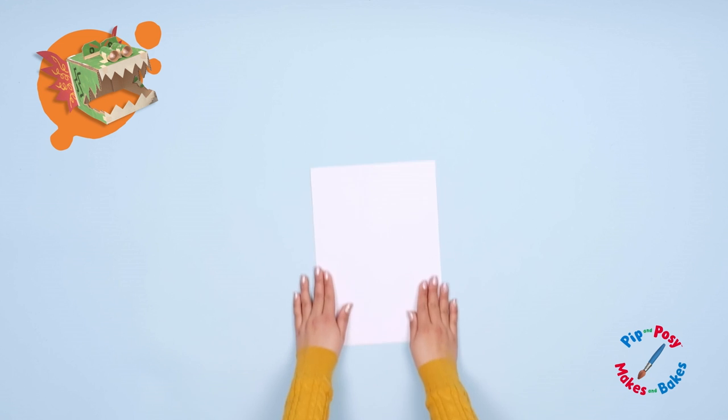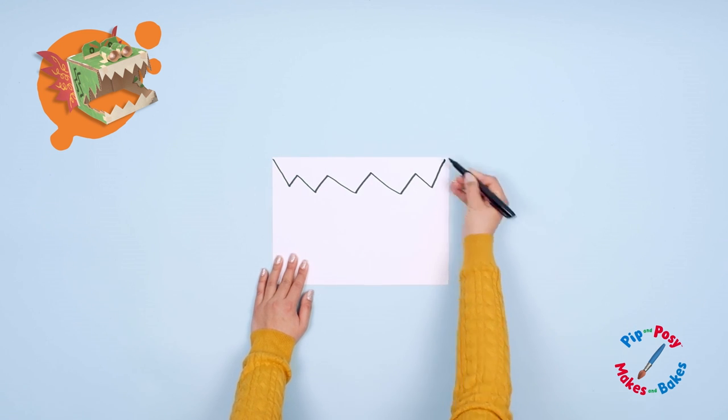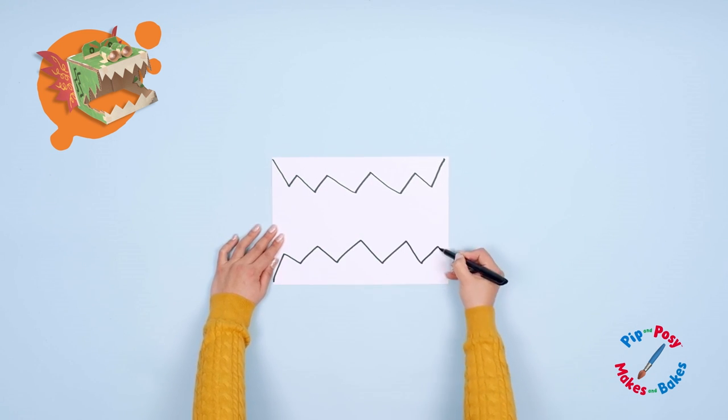Let's make the dragon's teeth. Turn your piece of white paper sideways and draw two sets of teeth like this. Set aside.